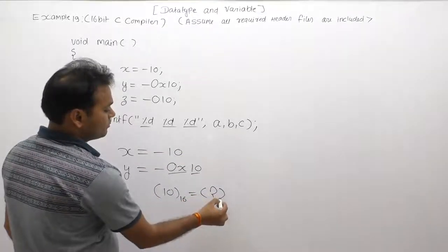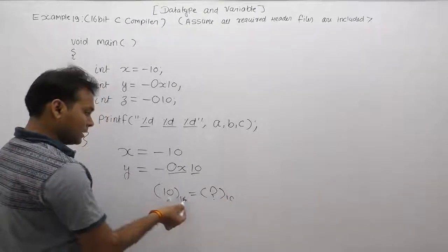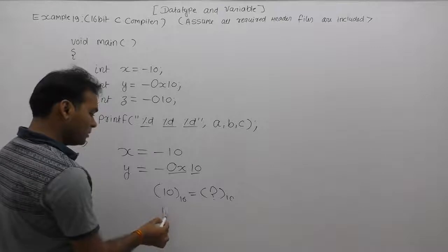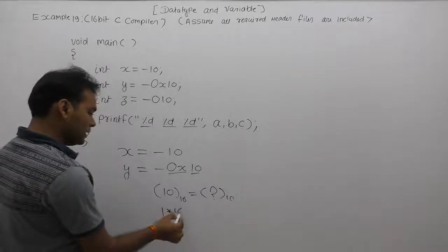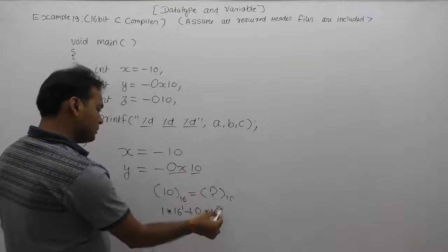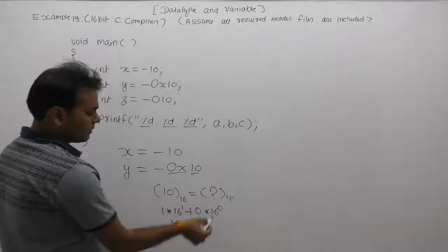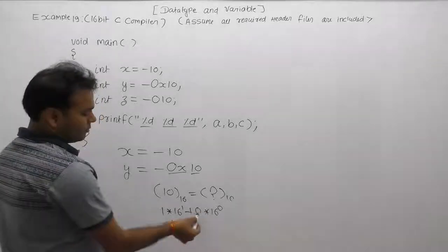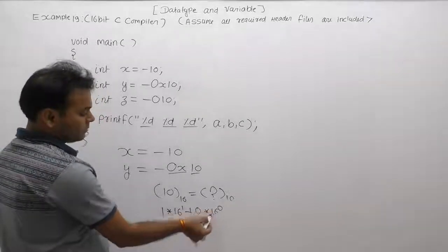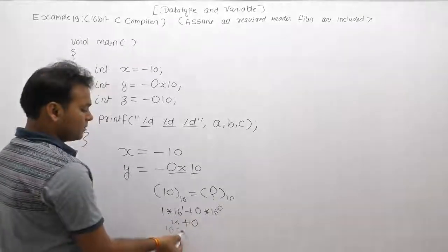In that case, simply the equivalent decimal value: 1 multiply by 16 to the power 1 plus 0 multiply by 16 to the power 0. In that case, 16 plus... 16 to the power 0 is 1, 1 multiply by 0 is 0. Finally, the equivalent decimal value is 16.